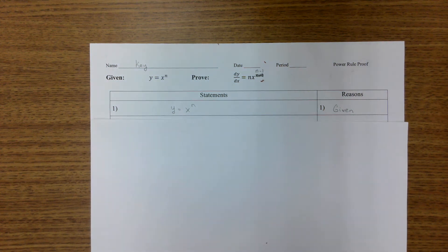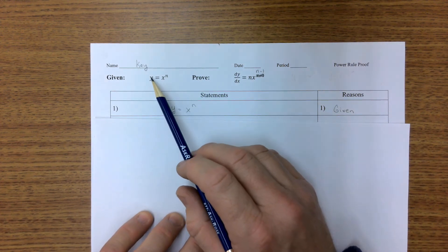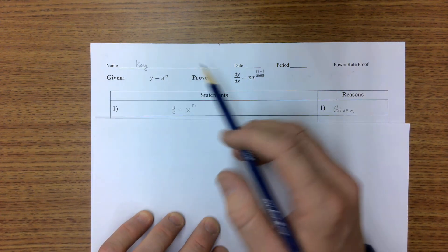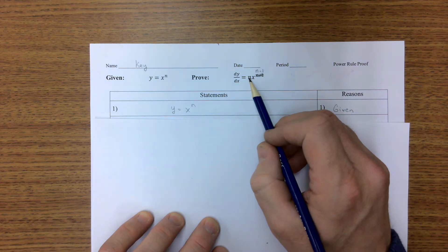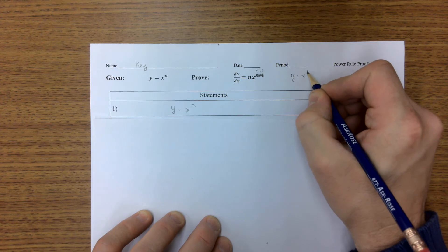All right, hello everyone. This is Mr. Crozier and we're going to do the power rule proof. We're going to start with the equation y equals x to the n and we're going to prove that its derivative is n times x to the n minus 1. Real simple, if we just make an easy one, x to the fourth...